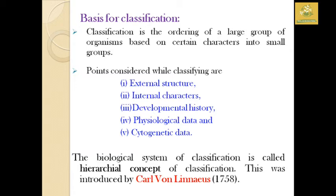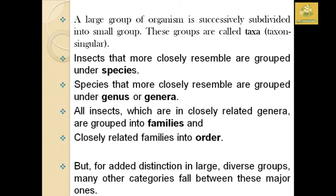The criteria used for classification include external structures, internal characters, developmental history, physiological data, and cytogenetic data. The basic biological system of classification is called the hierarchical system of classification. This was first introduced by Carl von Linnaeus in 1758, after which large groups of organisms were successfully subdivided into small groups called taxa — taxon being the singular form.